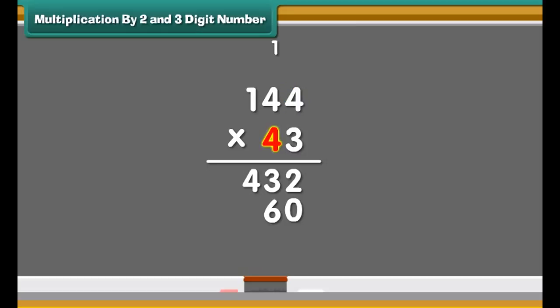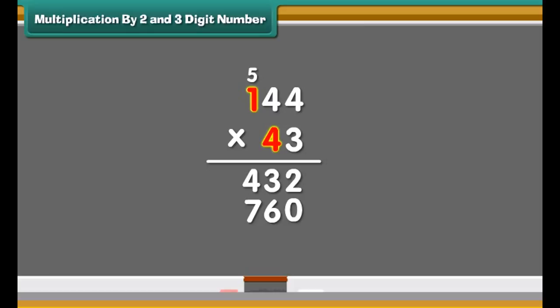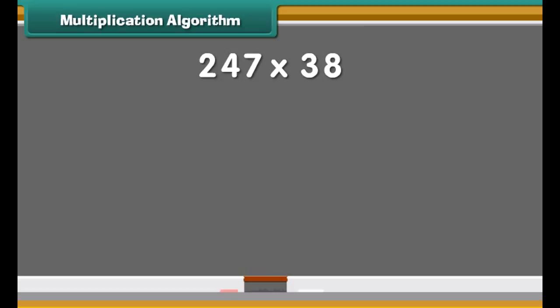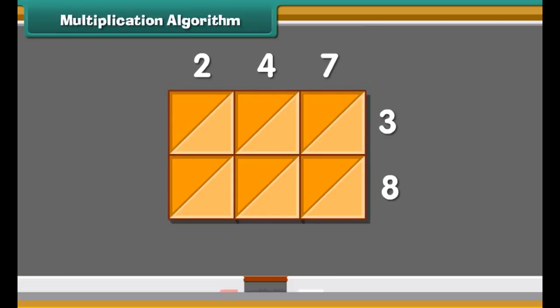Now add a 0 in the 1's place and multiply 4 by the number in the 1's place. 4 times 4 is 16. Write 6 in the 10's place and carry 1 forward to the 100's place. Multiply 4 with 4 in the 10's place and add 1 carried forward. Write 7 in the 100's place and carry 1 forward to the 1000's place. Multiply 4 with 1 in the 100's place and add 1 carried forward. Write 5 in the 1000's place. Now add the two values — we get 6192. So 144 multiplied by 43 is 6192.